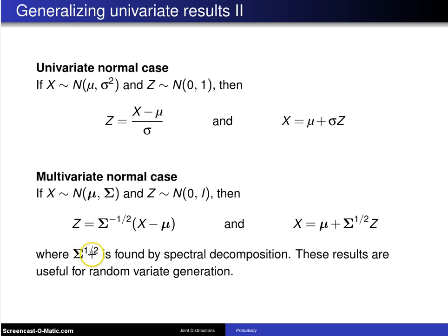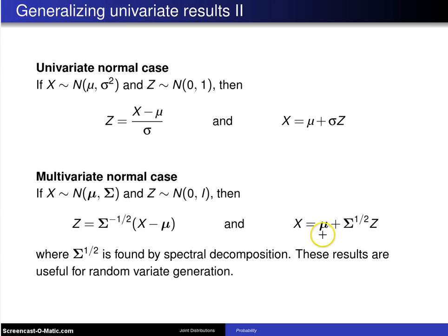This sigma to the one-half is found by spectral decomposition. In the other direction, analogous to x equals mu plus sigma z, you have x equal to the vector mu plus sigma to the one-half times z. These particular results are useful for random variate generation.